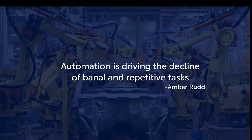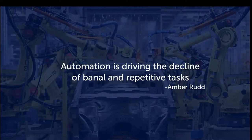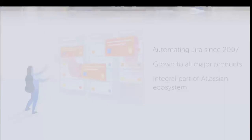Creativity is a big part of what automation brings to the Atlassian ecosystem. We've been automating in Jira since about 2007, and we've seen that growth happen across all Atlassian products since then. The automation tools — and some may say the entire marketplace of apps — are actually integral and a differentiator in the market for Atlassian products.